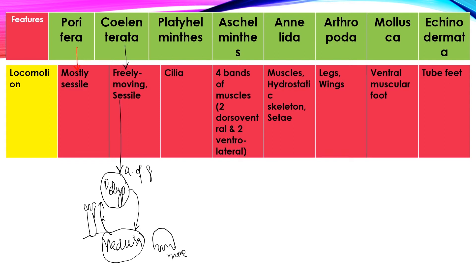This is the only group of Kingdom Animalia which shows Alternation of Generation. Next comes Platyhelminthes. Other necessary members — it is the only group of this form, they are called sessile, they can move. Nematodes have four bands of muscles in their environments — they are the first group in their environments.